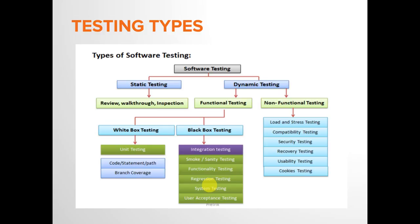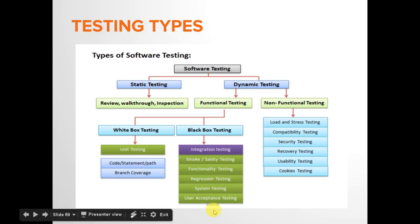System testing means how your application works when it is integrated with other software systems. For example, two websites communicating with each other via APIs — you need to test how your web application performs when combined with other software systems. Business complexities are increasing, so testing functionalities in an end-to-end environment is called system testing.